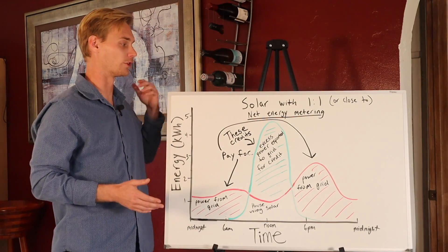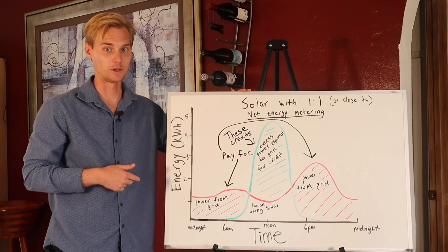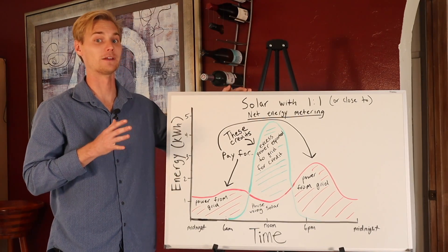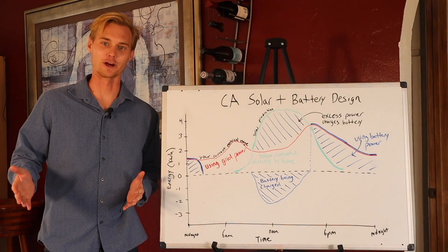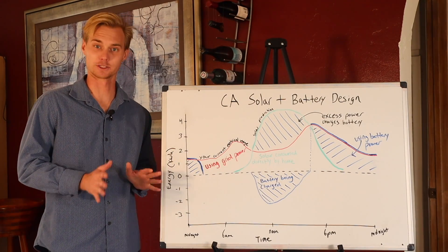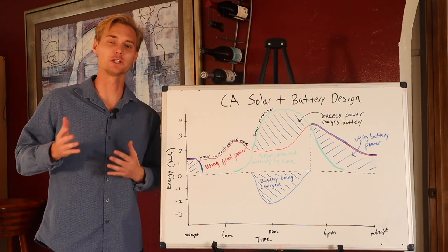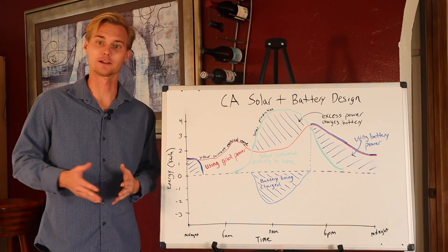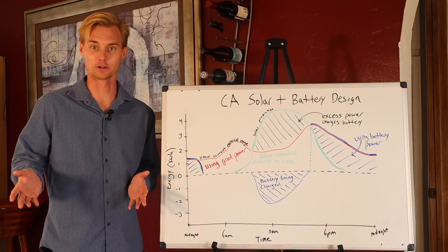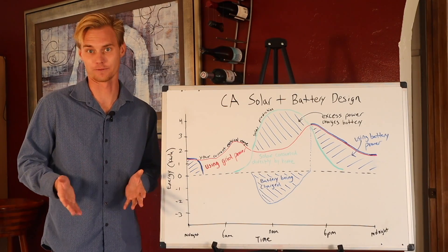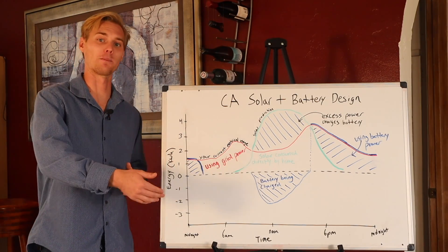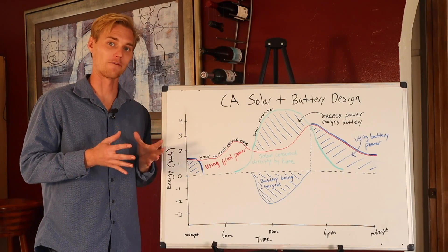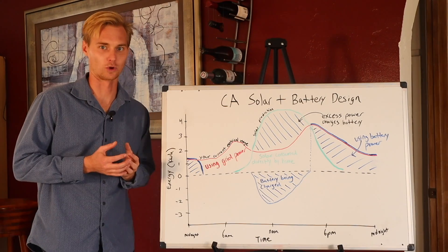In the scenario where the utility company is not offering one-to-one net metering, the system is actually going to look a little bit more like this. I know this is a little bit more of a complex chart here, but I'm going to explain it to you. If the utility company is not going to really give you what the power is worth, like let's say they just want to give you cents on the dollar for what the power is worth, like in California, for example, instead of giving all the power back to the grid, like in the first example, now we're going to want to have a battery to capture that excess storage.